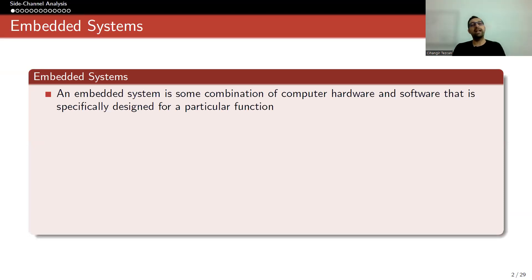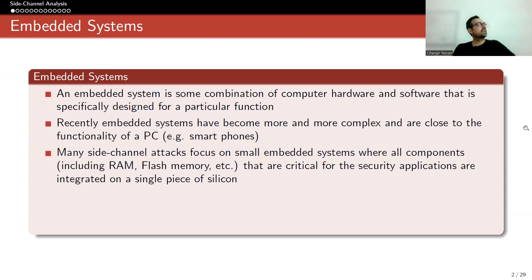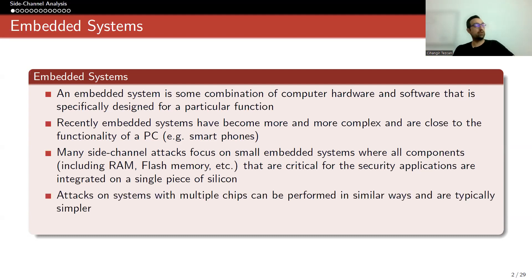Let's talk about embedded systems first. An embedded system is some combination of computer hardware and software that is specifically designed for a particular function. This is actually what we are dealing with most of the time with IoT or lightweight cryptography. Recently, embedded systems have become more and more complex and are close to the functionality of a PC — for example, smartphones or tablets. Many side channel attacks focus on small embedded systems where all components, including RAM and flash memory, that are critical for security applications are integrated on a single piece of silicon. When you're trying to build it smaller, you get rid of some security properties, so they become more vulnerable.